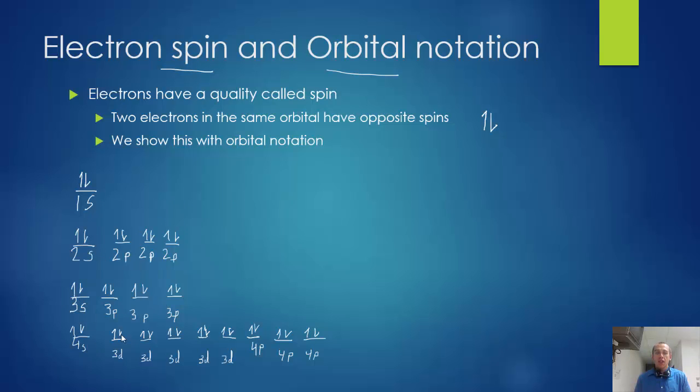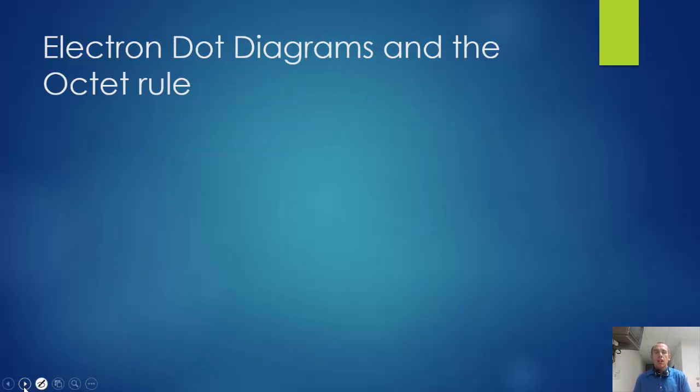1s, 2s, 2p, 3s, 3p, 4s, 3d, 4p, 5s, 4d, 5p, you guys know the energy levels. Alright, so that's orbital notation, not a huge deal.